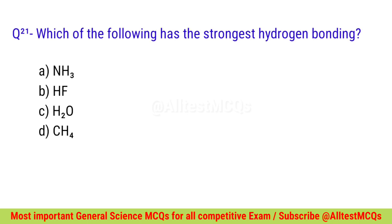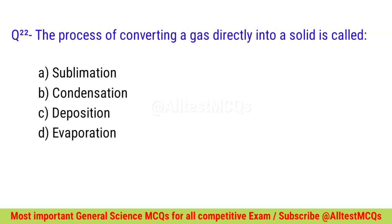Question number twenty-one: Which of the following has the strongest hydrogen bonding? Correct option is C — H₂O. Question number twenty-two: The process of converting a gas directly into a solid is called? Correct option is C — Deposition.